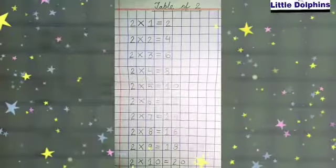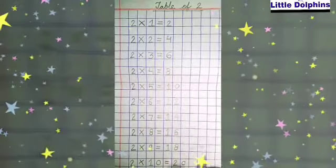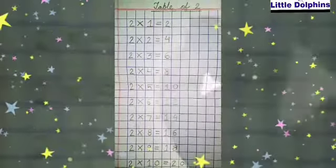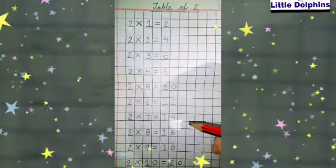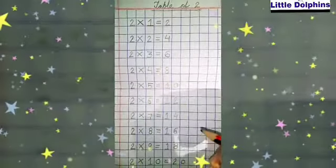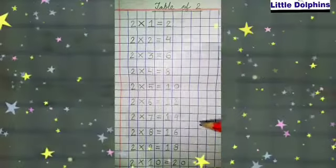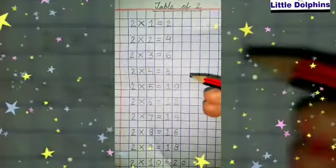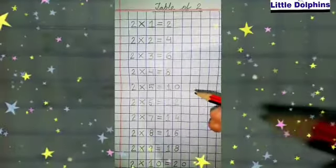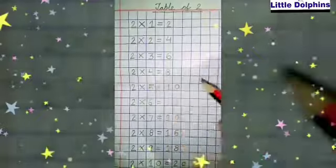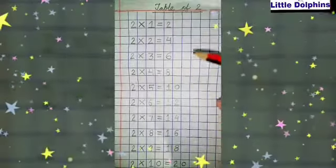Hello kids, how are you all? Today we are going to learn the table of 2. In math, tables are a way of presenting information such as numbers arranged in rows and columns.